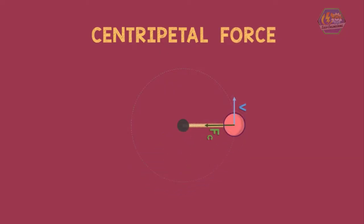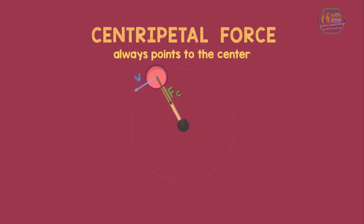Let's say we have a force represented by this arrow. The force is pointing towards the center of the circle. Remember that the centripetal force always points to the center. So as we rotate it around, you can see that the velocity is constantly changing and so is the force.